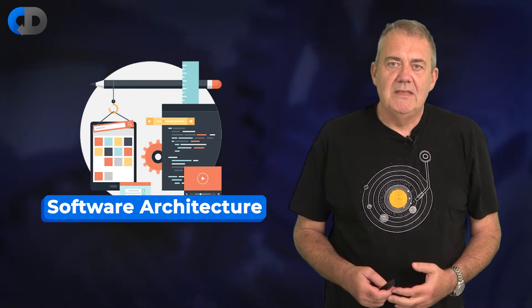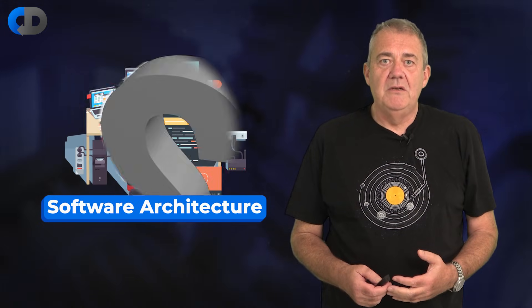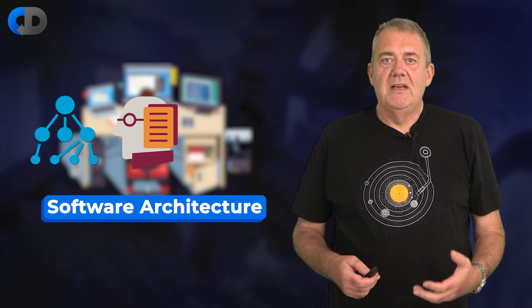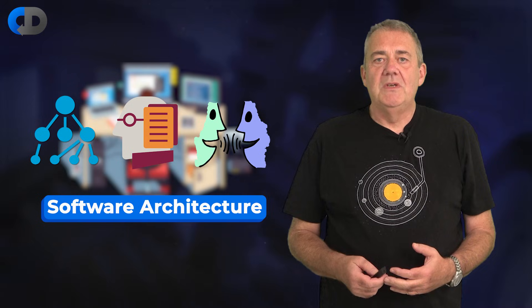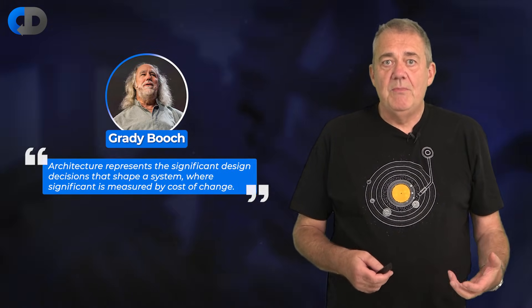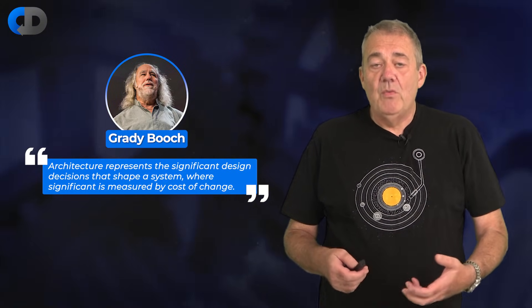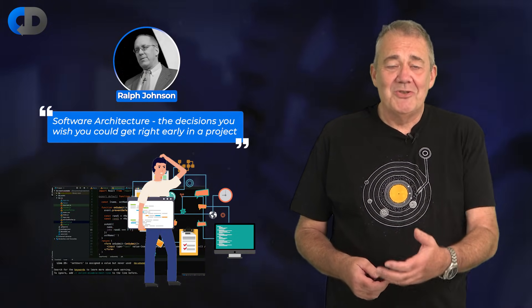Software architecture is a complicated topic. It's hard enough to define, let alone how hard it is to do it well. Software architecture is about how we structure, define, and talk about software systems, but it's also often a role for people in software development organizations, and architectural decisions are often important. They define what is easy to do and what is not, to the extent that some people say that software architecture is best defined by representing the stuff that we need to get right. I think more likely it's the stuff that we wish we had got right.